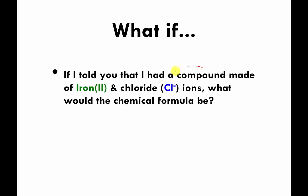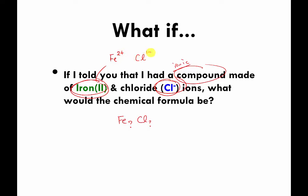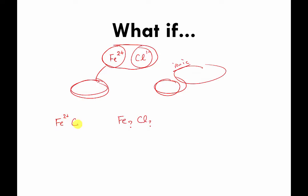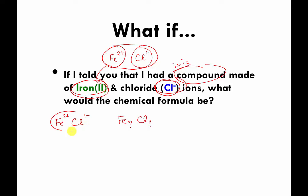Here's a problem to think about. If I told you I had an ionic compound made of iron(II) and chloride ions, and I want to know what the formula is — the symbol for iron is Fe, so it's going to be some number of irons stuck to some number of chlorides. Roman numeral II means this iron has a charge of plus two, and the chloride has a charge of negative one. You have to figure out how many irons and how many chlorides you need so that their electrical charges completely cancel each other.